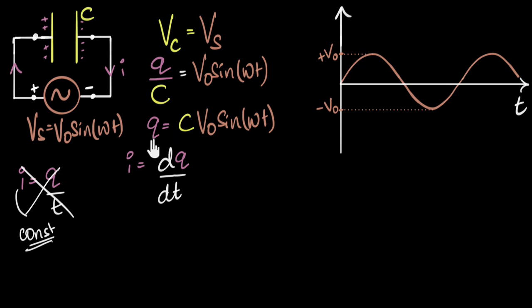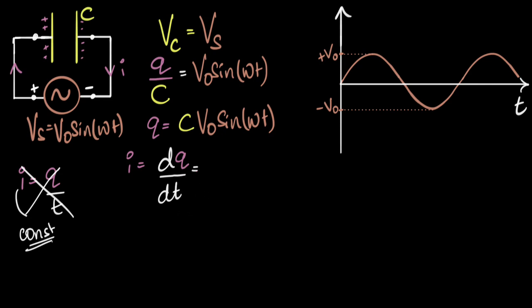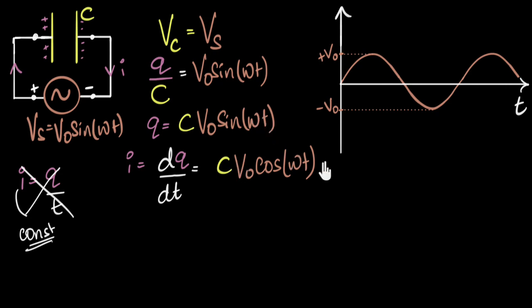You might say: this is the charge on the capacitor, so when you differentiate, you're calculating how quickly the charge on the capacitor is changing — is that the current? Yes, because the rate at which the capacitor charge changes is the same as the rate at which charges are flowing. If there are 10 coulombs flowing per second, then 10 coulombs are getting deposited on the capacitor plate. So the rate at which the charge on the plate is changing equals the current. Now differentiating Q = C·V₀·sin(ωt): C and V₀ are constants, differentiation of sine gives cos(ωt), and using the chain rule, ω pops out. So our expression for current is I = C·V₀·ω·cos(ωt).